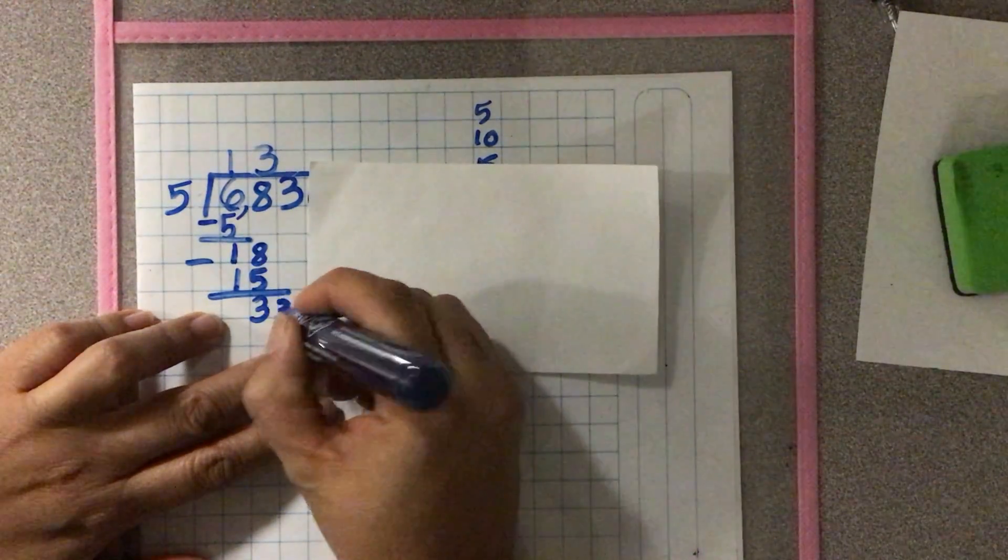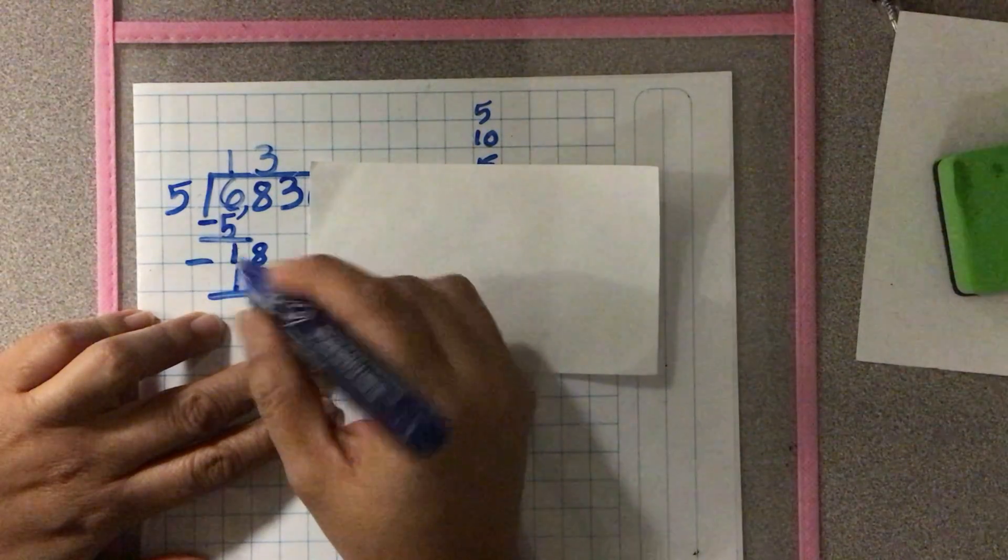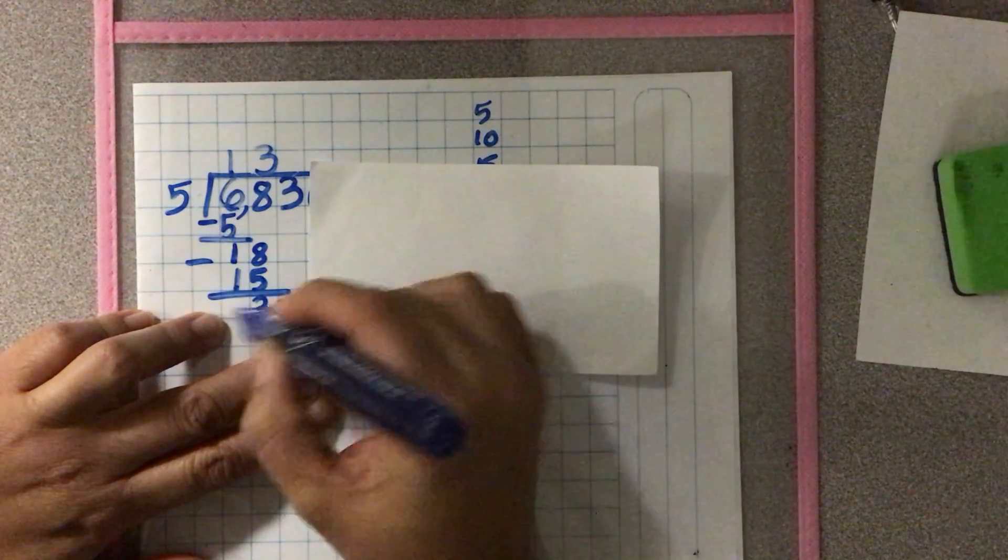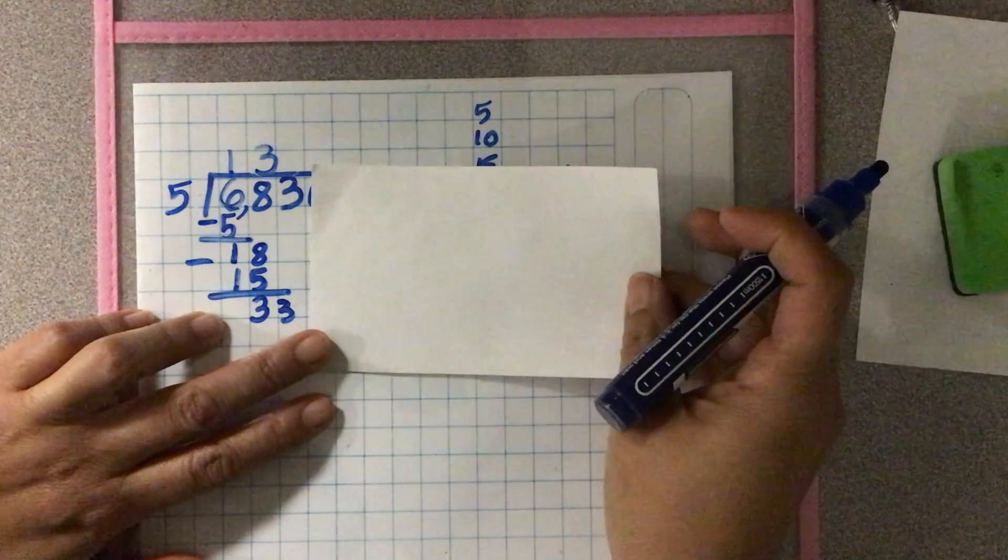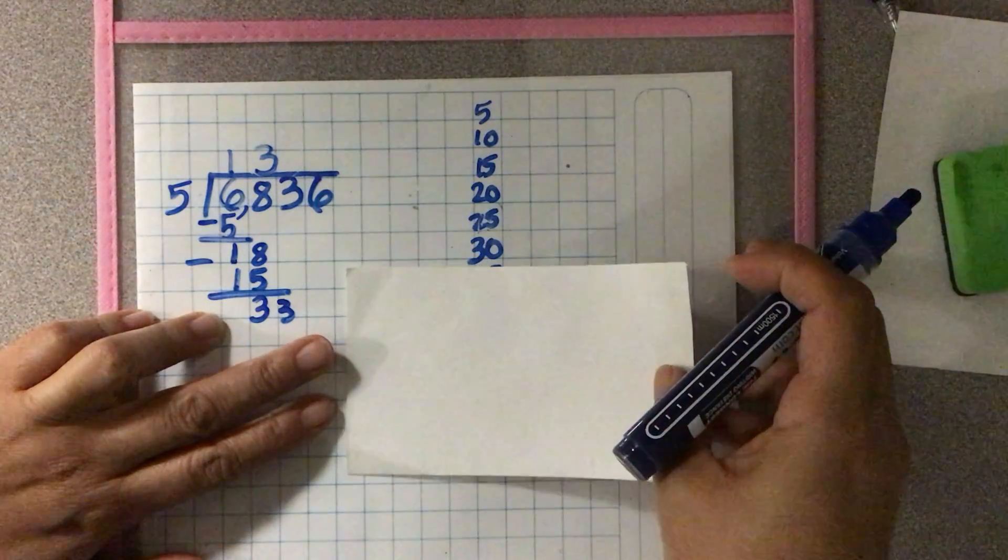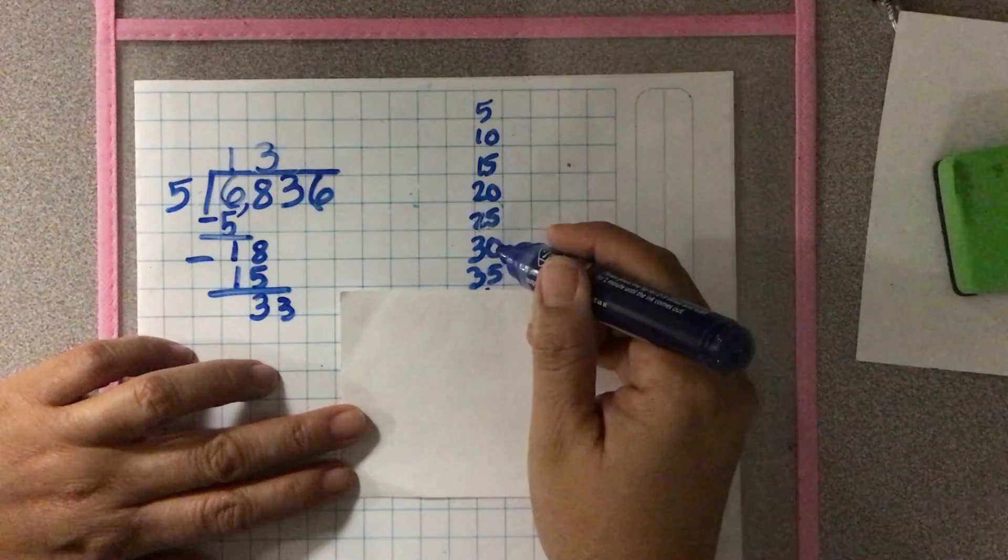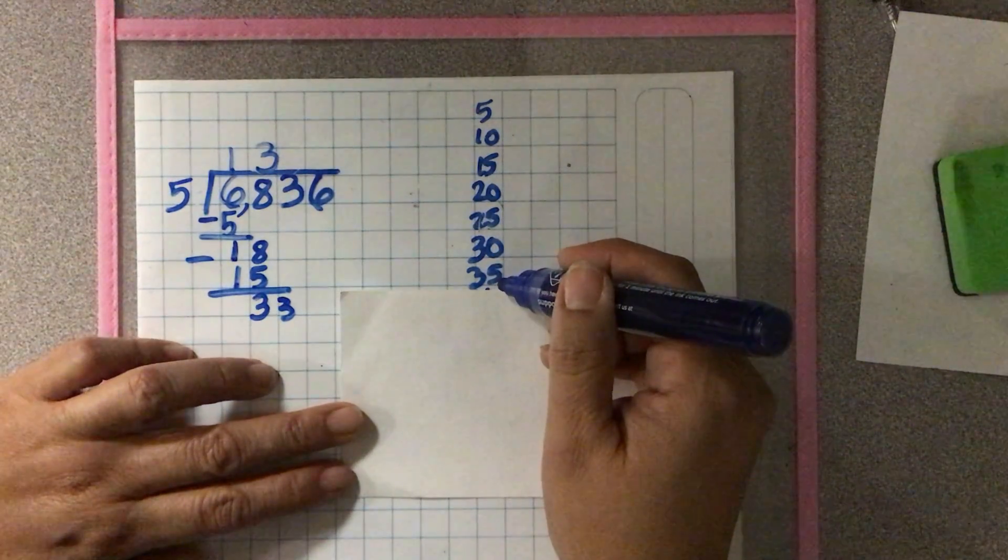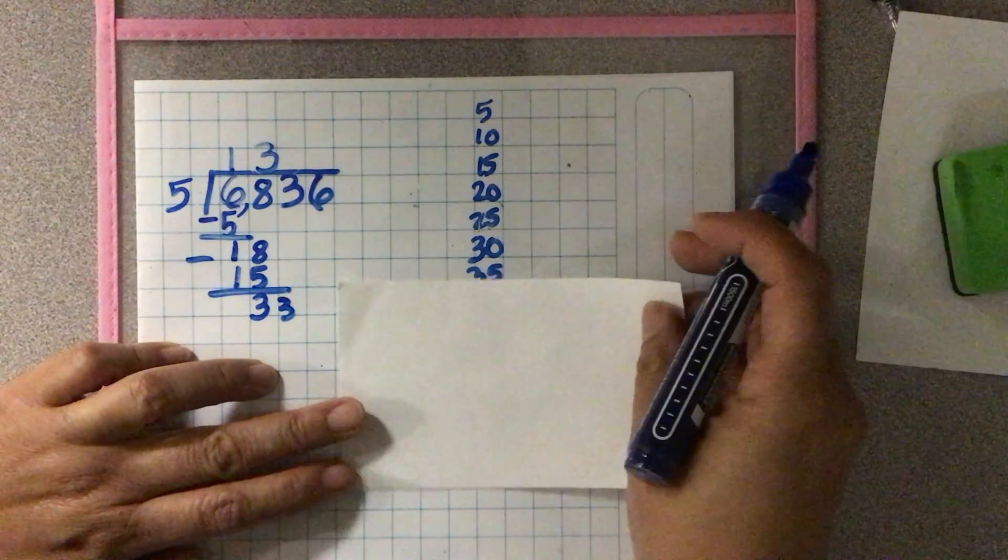I have 33 tens. 33 divided by 5, 33 tens divided by 5. I don't have 33 on my times tables, but I have 30. I cannot use 35 because I don't have 35. I have less than that, so I have to go back a little bit.